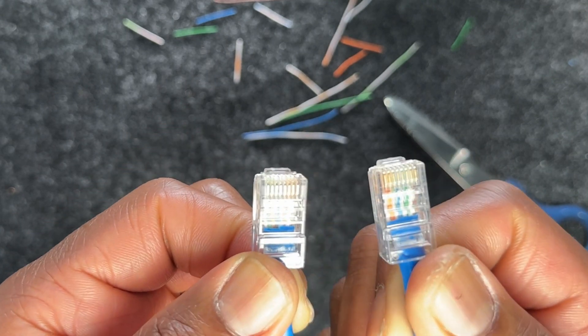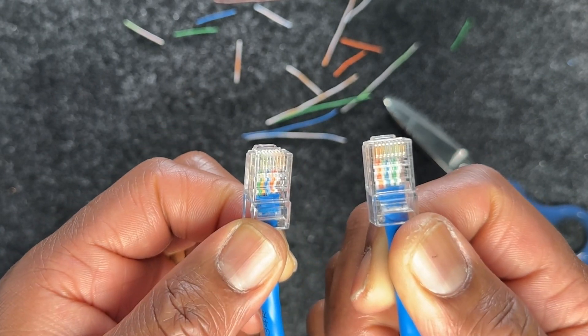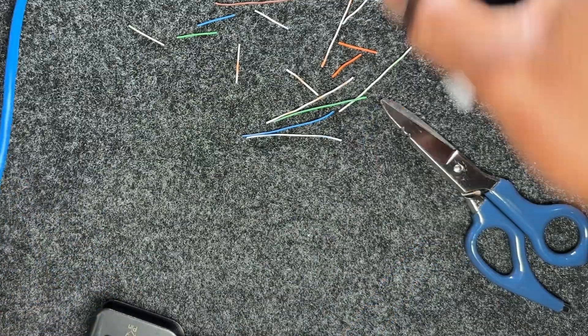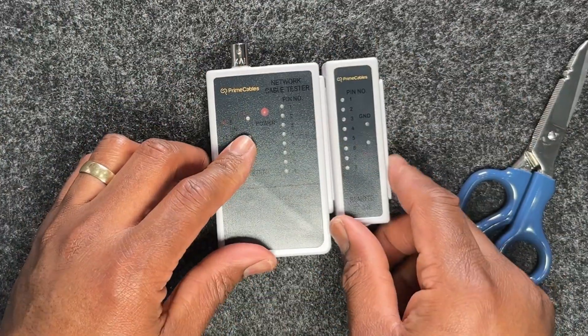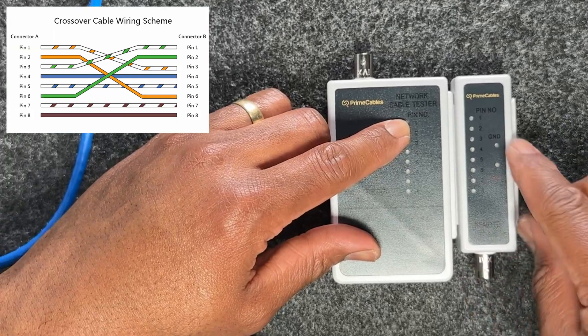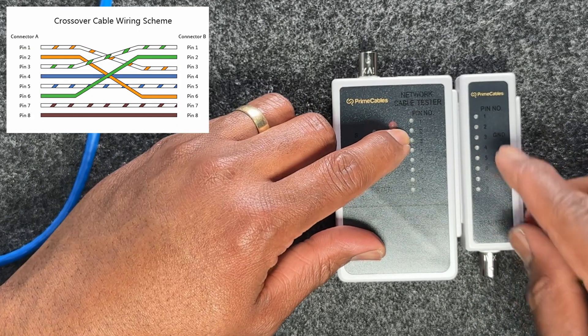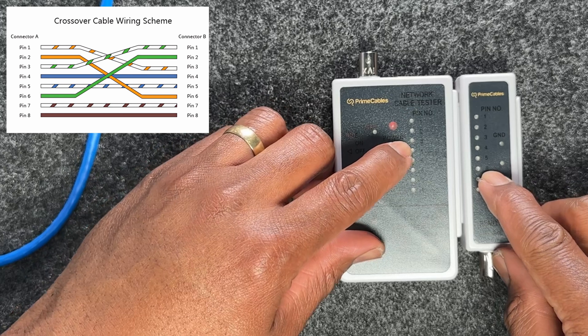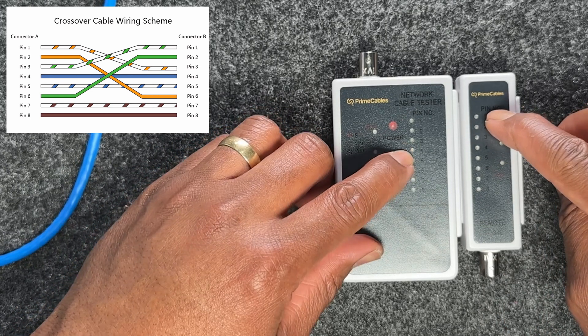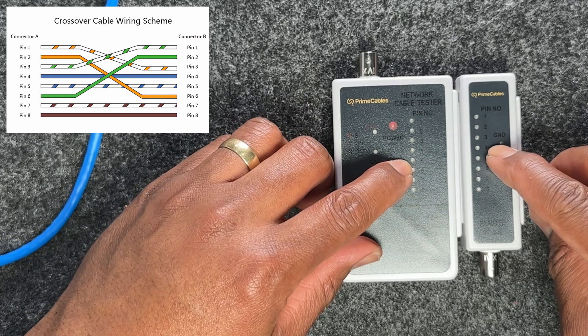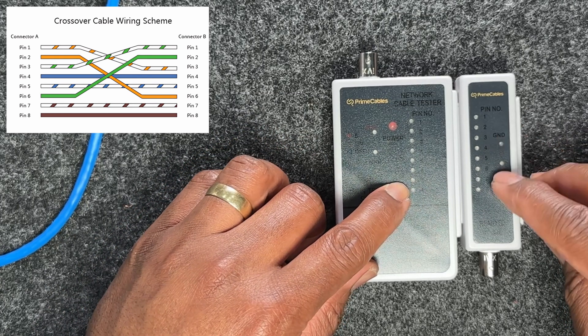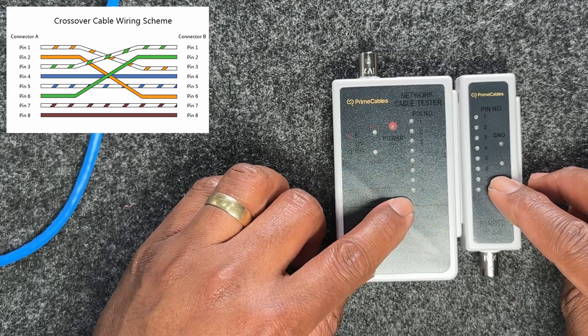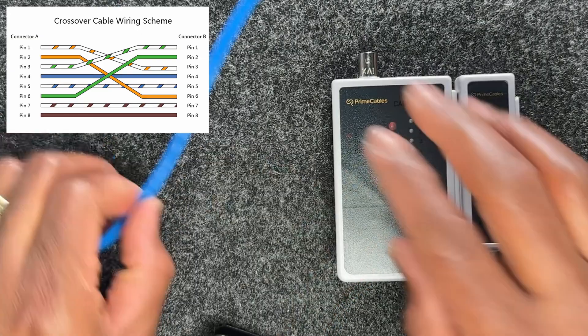Let's take a look at what the tester is going to show us. When I start using this tester, you're going to see that the numbers are bouncing around. Pin one will be pin three, pin two will be pin six, pin three will be pin one, pin four will be pin four, pin five the same. Pin six will cross over to pin two, seven will be seven, and eight will be eight.